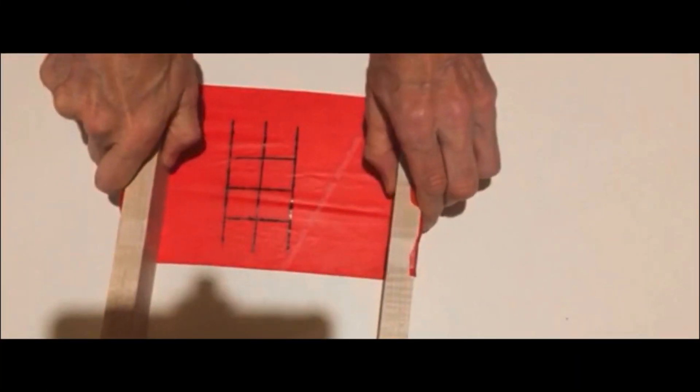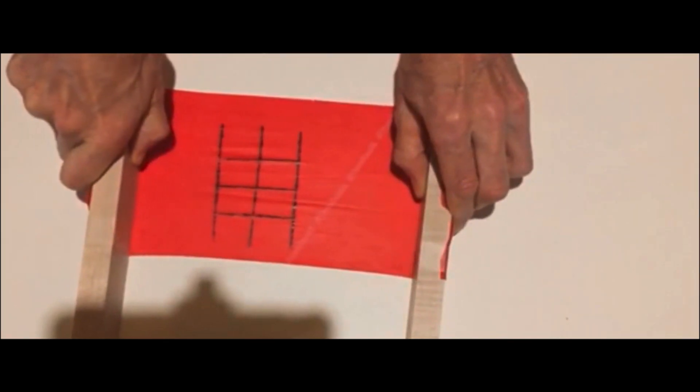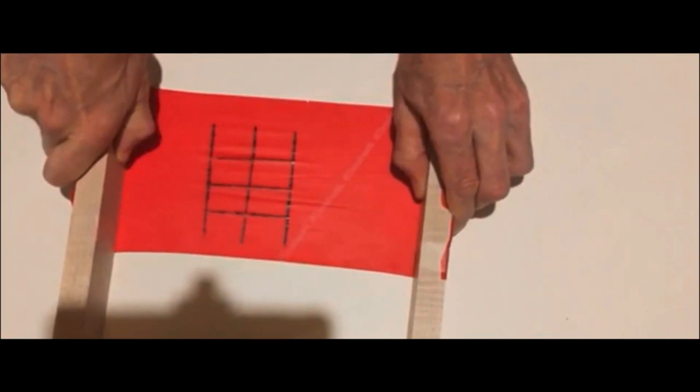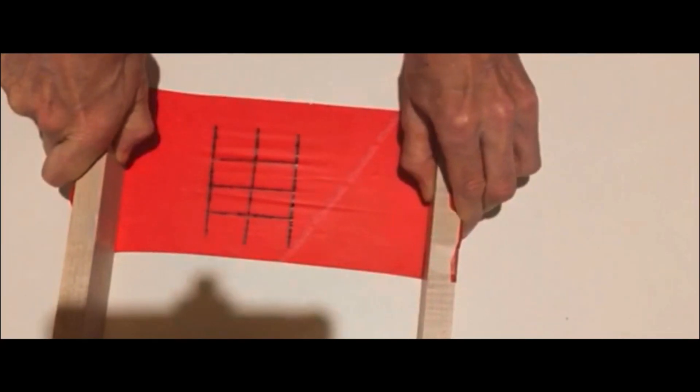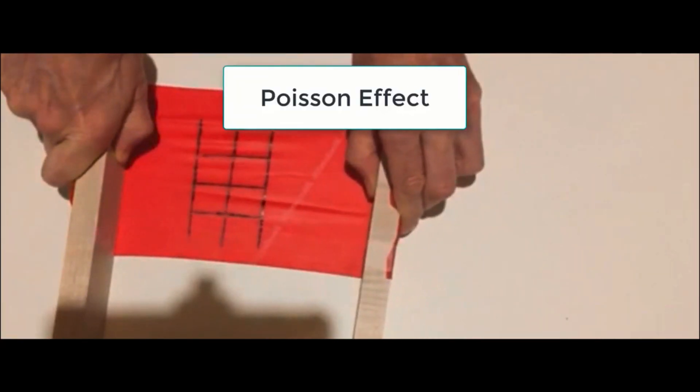We used a Sharpie marker to create a 2.5 cm square grid on the sheet. When we pull on this thin sheet of rubber, the squares become more and more rectangular. The phenomenon that we are observing is what is known as the Poisson effect.